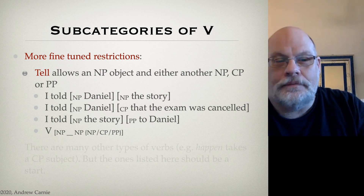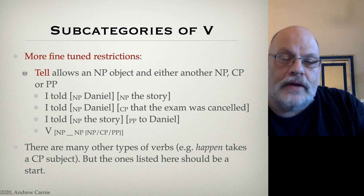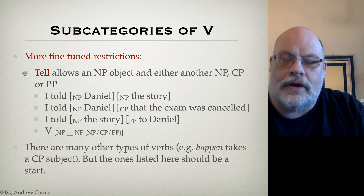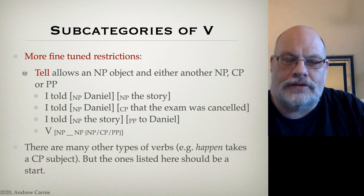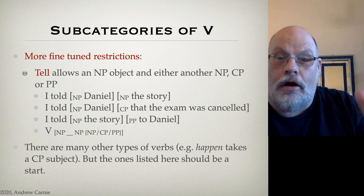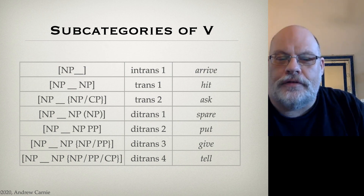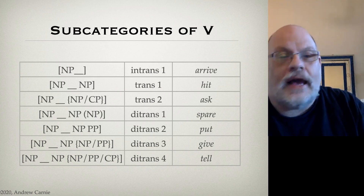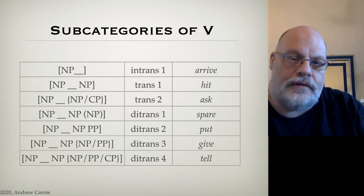These features can get quite complex. There are many, many different subcategories of verbs defined in terms of their argument structure — I've just given you a little taste here. There's actually a book called Verb Classes of English where you can find all the different verb classes listed. Here are a few of them with their features: one kind of intransitive, two kinds of transitives, and four different kinds of ditransitives. And there are many, many more. We can use these features to distinguish among all these different verb classes.